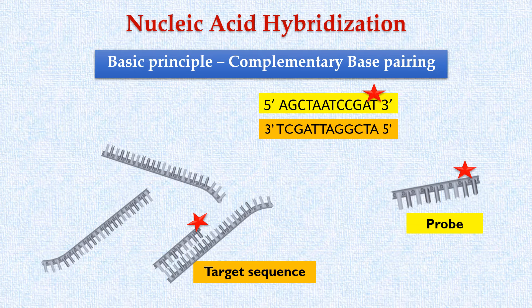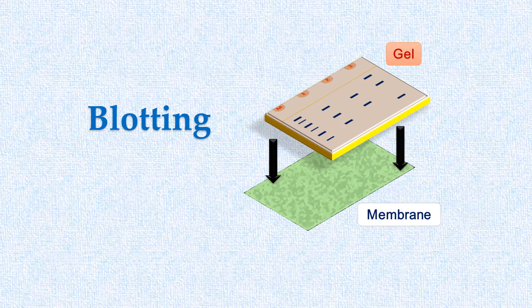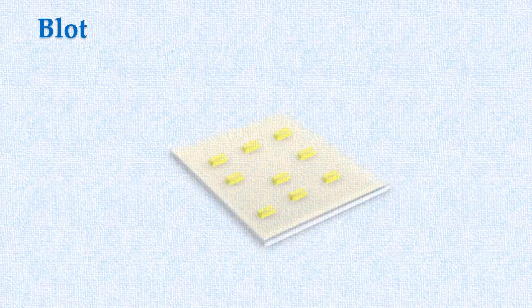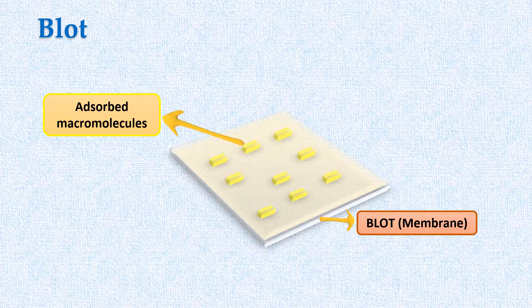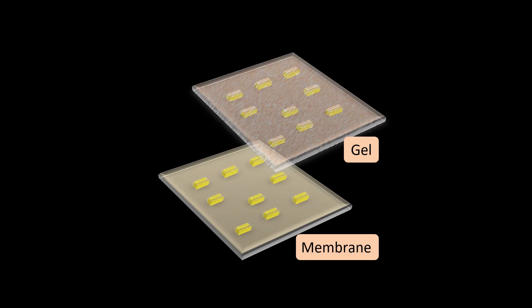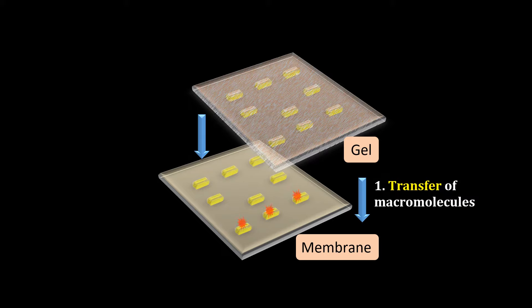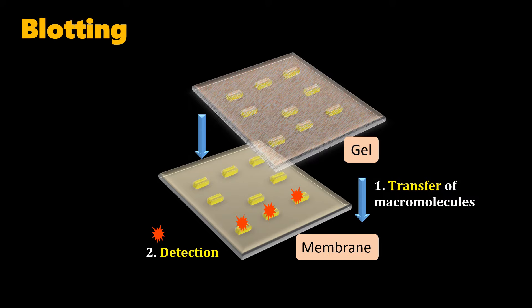Let's now understand what we mean by blotting. The term blot refers to the membrane on which biological molecules such as proteins and nucleic acids are adsorbed or immobilized. The process of transferring these molecules from a gel to a membrane followed by their detection on the membrane is known as blotting.